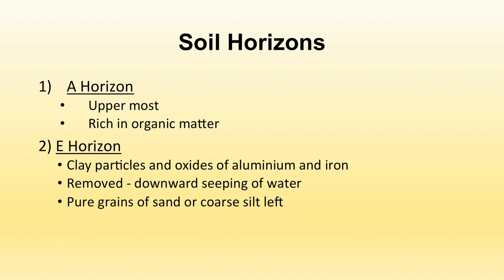When rainwater falls on the E horizon, it removes some of the minerals from this layer — they seep downward with the water. Pure grains of sand or coarse silt are left behind in this horizon, as the finer particles seep into the next layer with the help of water, leaving coarse material such as sand grains behind.